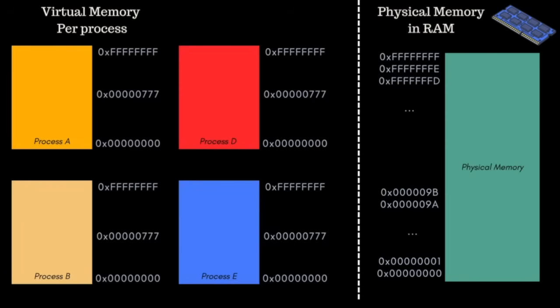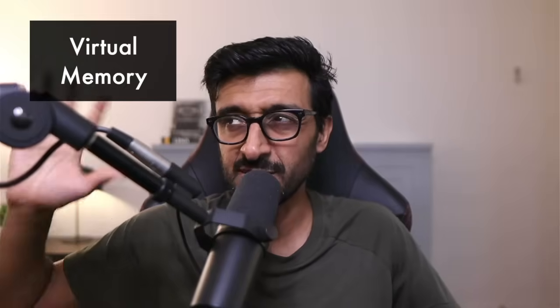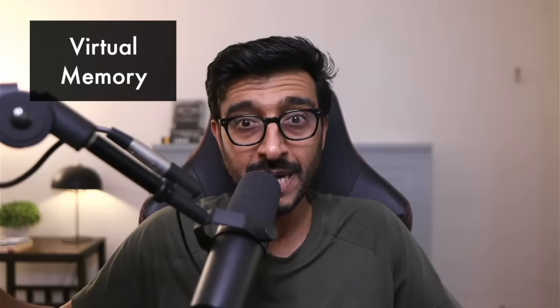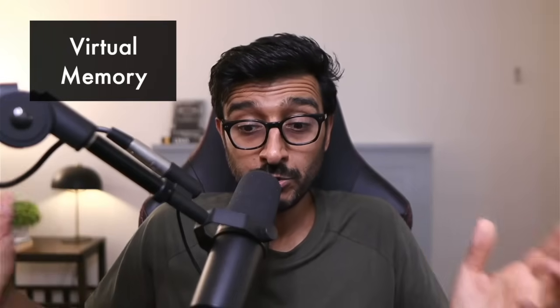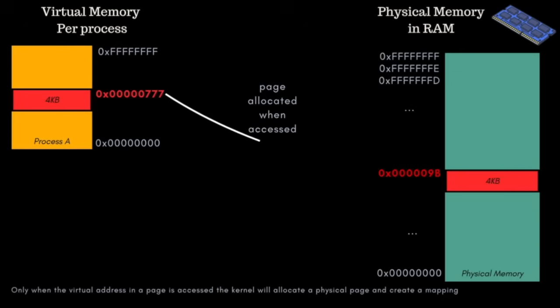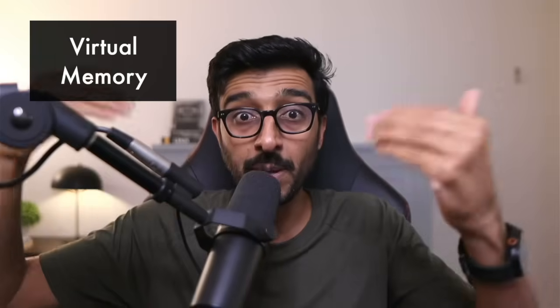So we ended up creating this layer called virtual memory. We assign a virtual memory address space — 48 bits out of the 64 — which gives you a massive area per process. We map pages of virtual memory: a virtual memory page of 4 kilobytes maps to a 4-kilobyte page in physical memory, but only when you actually request it. Initially the virtual memory space is created as basically nothing — smoke and mirrors — but if you access a virtual address, the kernel does the mapping and creates a mapping table called the page table.